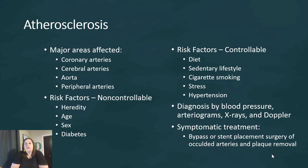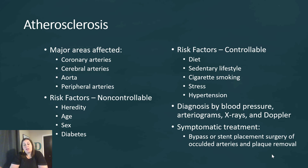Arteries affected by arteriosclerosis include the coronary arteries — servicing the heart, potentially causing heart attacks — the cerebral arteries in the brain, which can cause strokes, the aorta itself, and peripheral arteries throughout the body. Risk factors fall into two groups: non-controllable ones include heredity, age, sex, and diabetes; controllable ones include diet, sedentary lifestyle, cigarette smoking, stress, and hypertension.